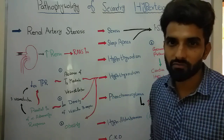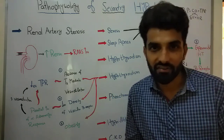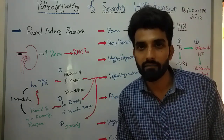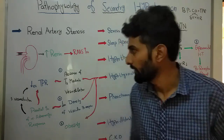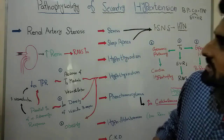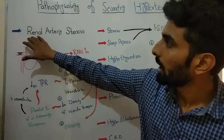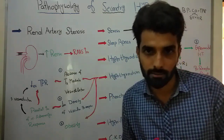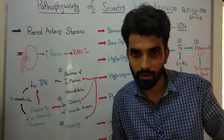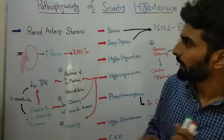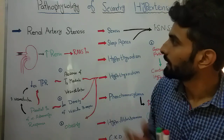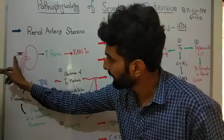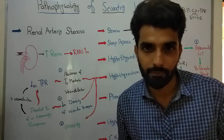Let's discuss some of the conditions that may develop secondary hypertension. The first one I will talk about is renal artery stenosis. Stenosis means getting narrow. The renal artery is basically the artery that is supplying blood to the kidney.